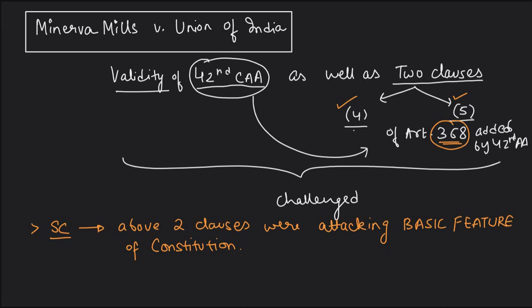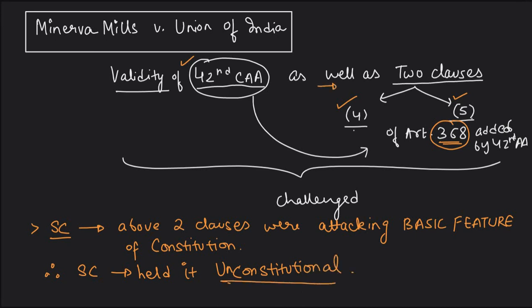The Supreme Court said that these two clauses of Article 368 are attacking the basic features of the constitution, which will not be allowed. In the Keshavananda Bharati case and the Indira Gandhi versus Raj Narain case, it had already been established that the constitution is supreme. You can amend the constitution, you can even form a new constitution, but without touching the basic features. Therefore, the Supreme Court held this 42nd Amendment and these two clauses as unconstitutional.